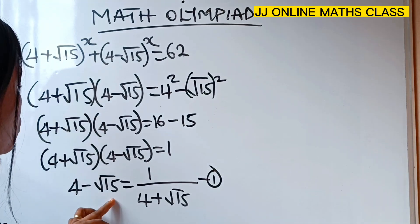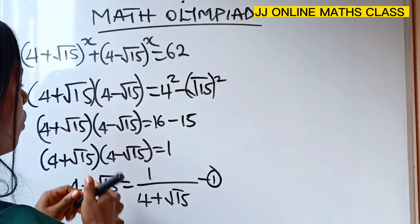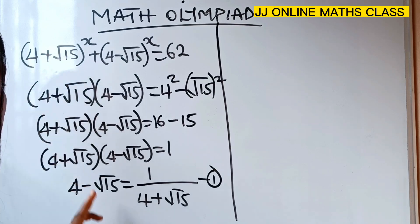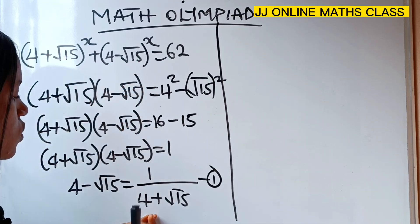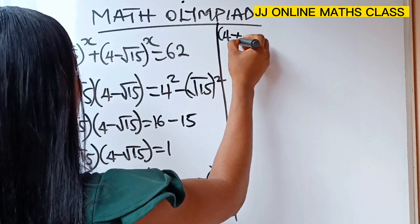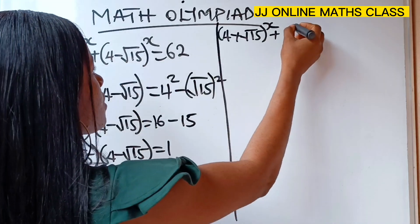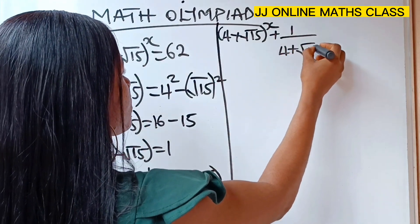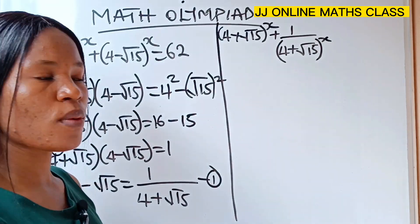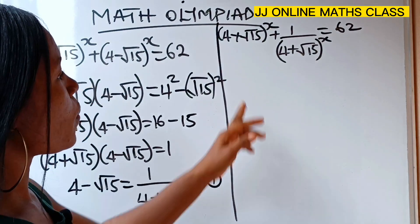Since we said that 4 minus root 15 is equal to 1 over 4 plus root 15, we are going to substitute this into our equation. Anywhere I see 4 minus root 15 I'm going to replace it with 1 over 4 plus root 15. That means we can write: 4 plus root 15 raised to the power of x, plus 1 over 4 plus root 15 raised to the power of x, is equal to 62.